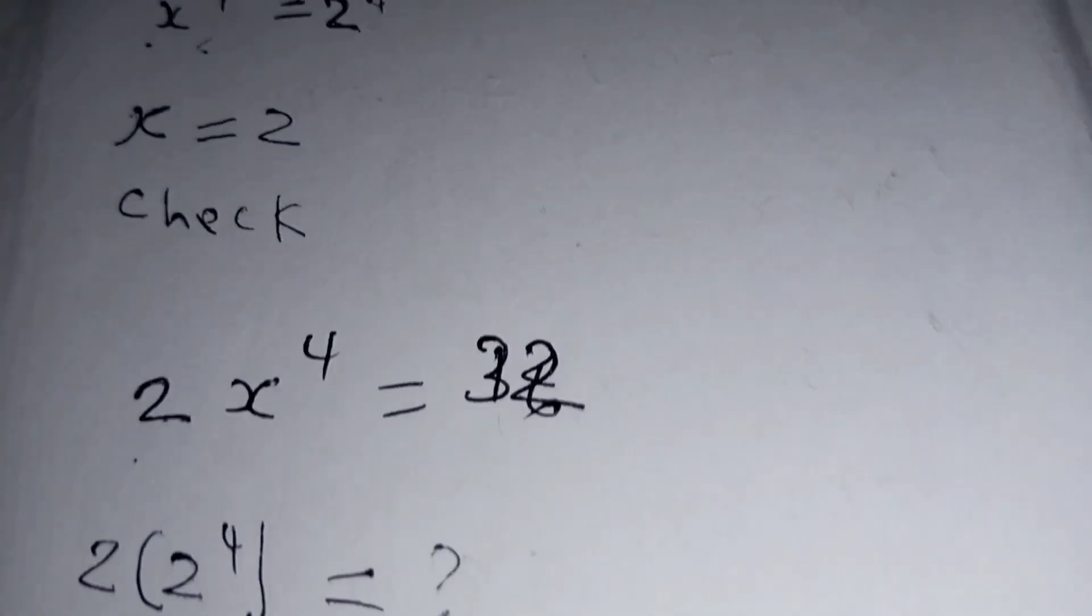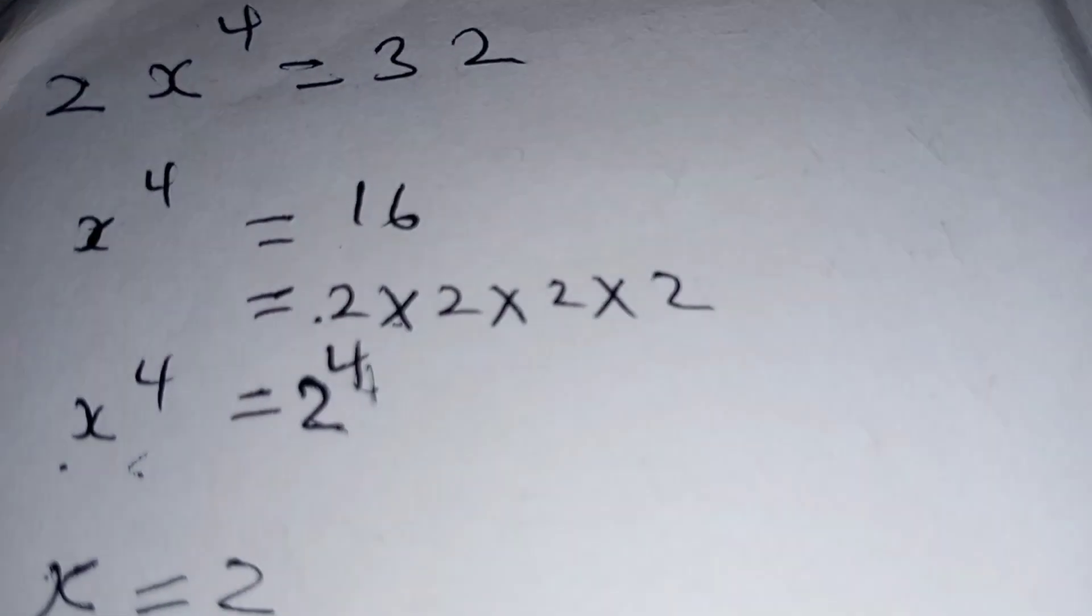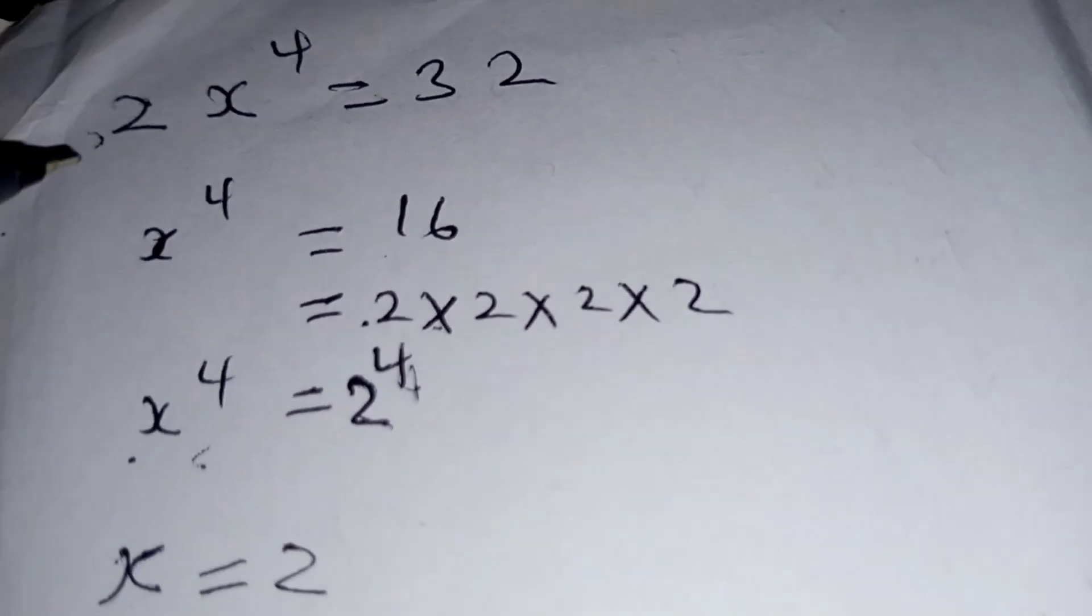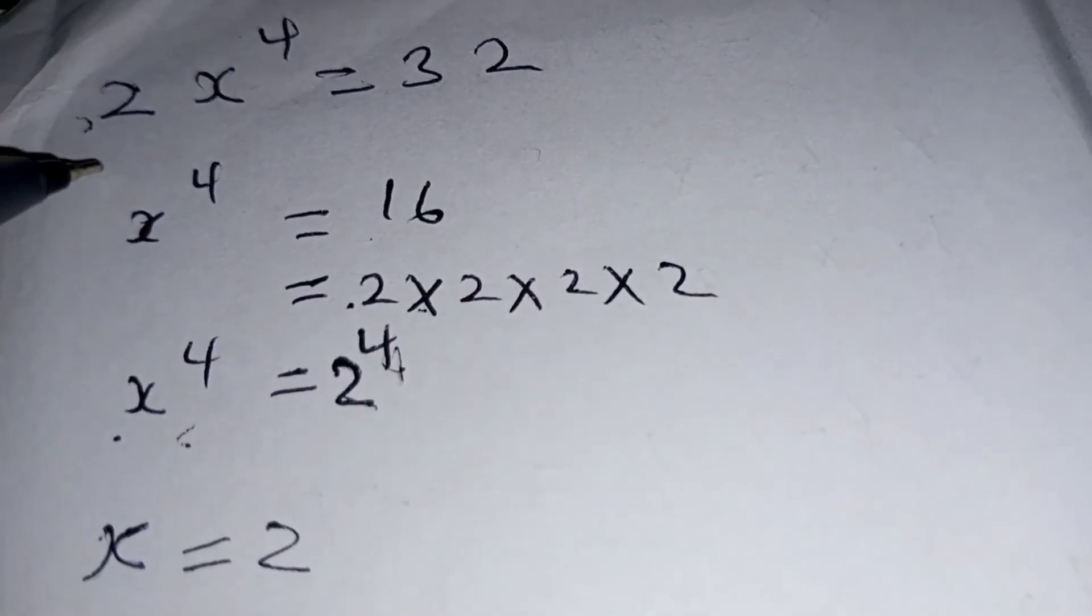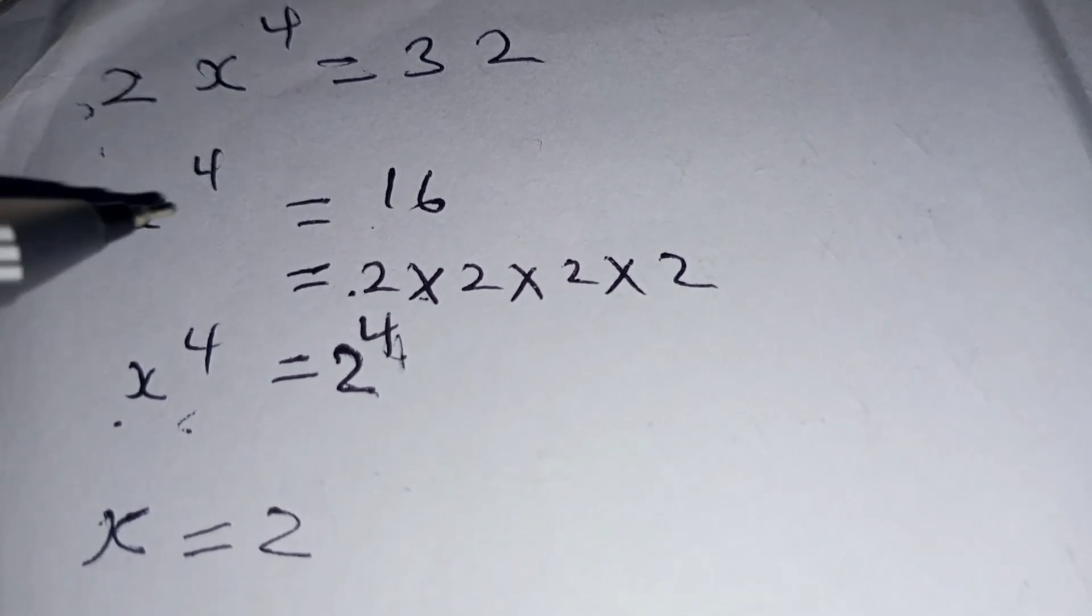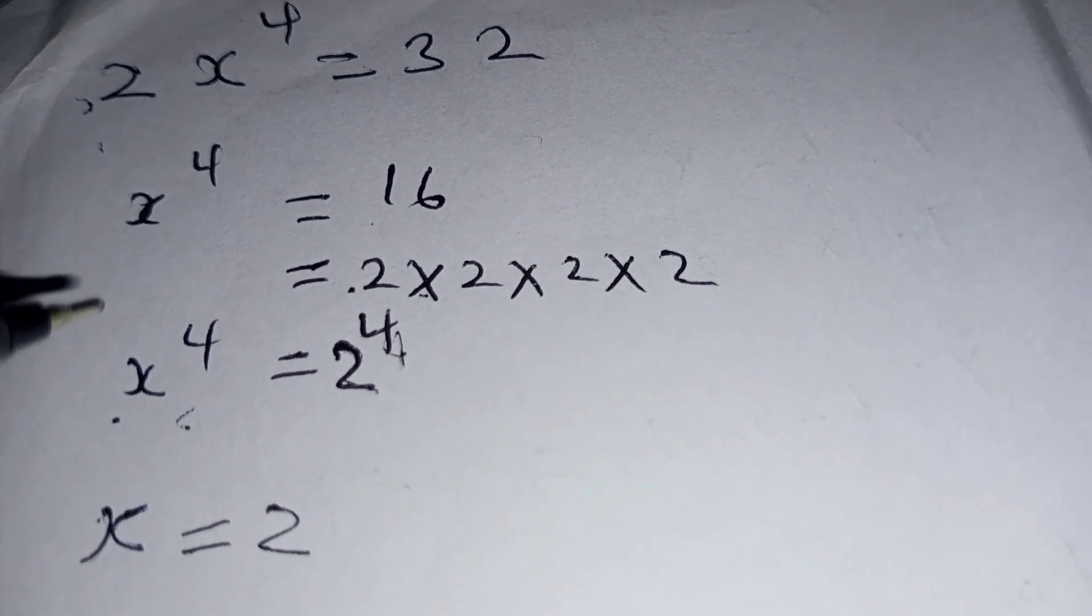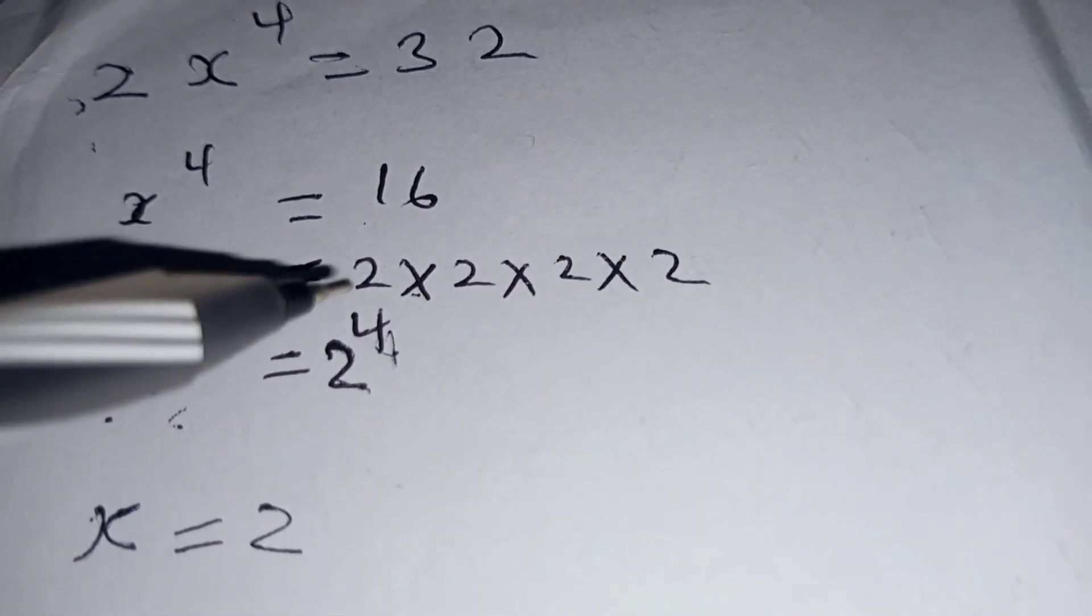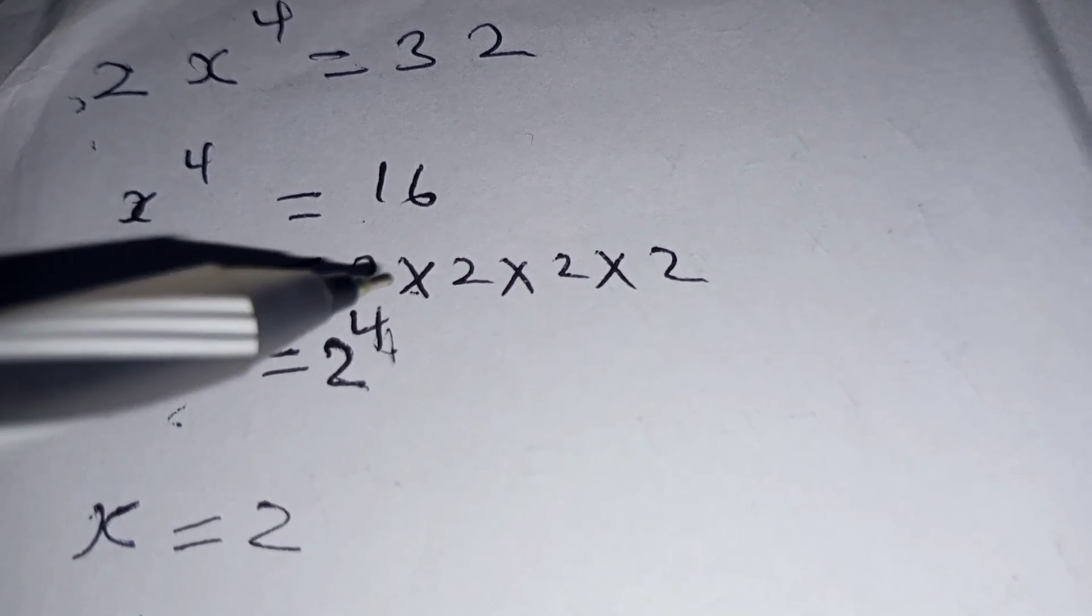So let's recap. You are required to obtain the value of x in this equation. So the first step we divided both sides by 2, whereby 32 divided by 2 is 16, and we expressed 16 in terms of 2.